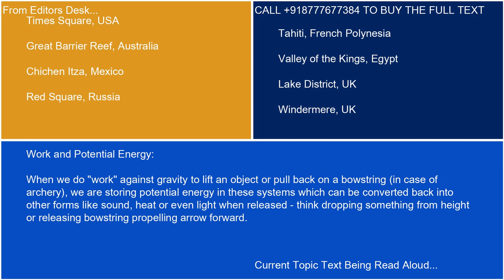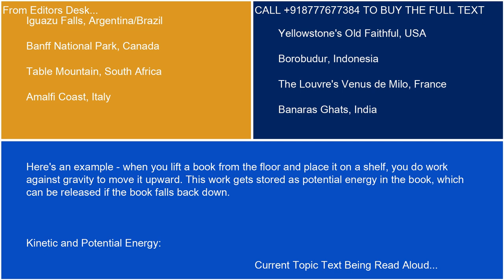Work and potential energy. When we do work against gravity to lift an object, or pull back on a bowstring in the case of archery, we are storing potential energy in these systems, which can be converted back into other forms like sound, heat, or even light when released. Think of dropping something from a height or releasing a bowstring propelling an arrow forward. When you lift a book from the floor and place it on a shelf, you do work against gravity to move it upward. This work gets stored as potential energy in the book, which can be released if the book falls back down.